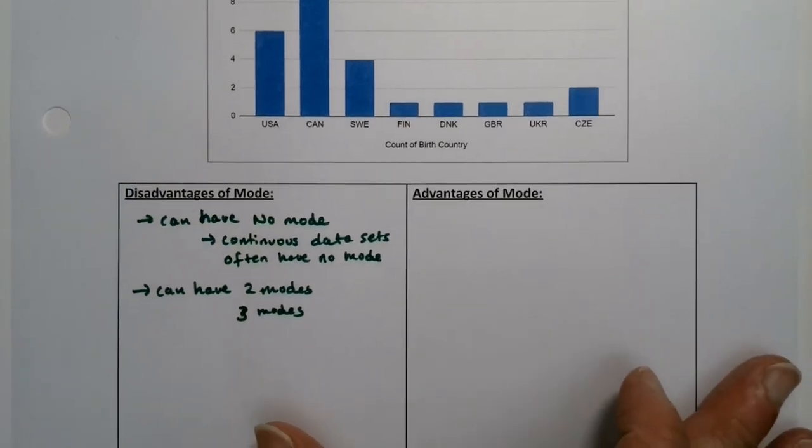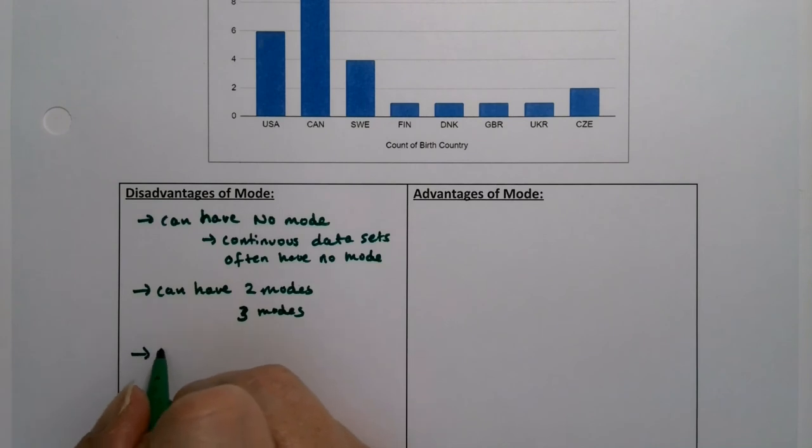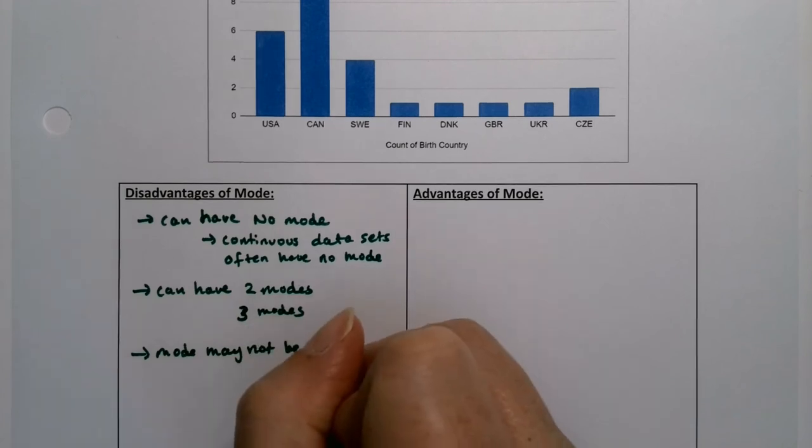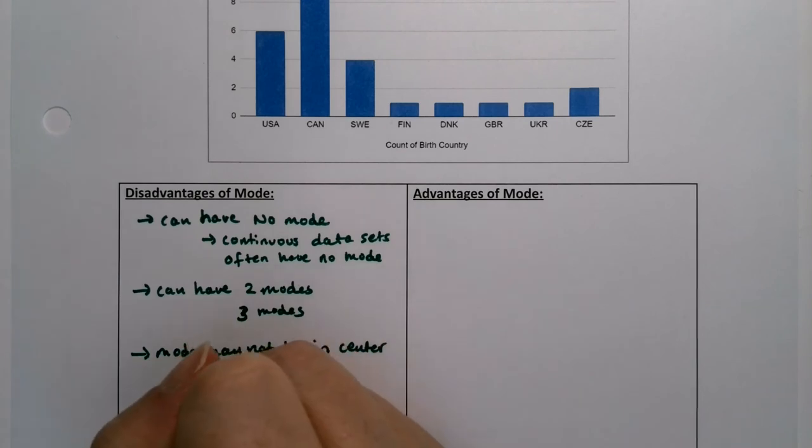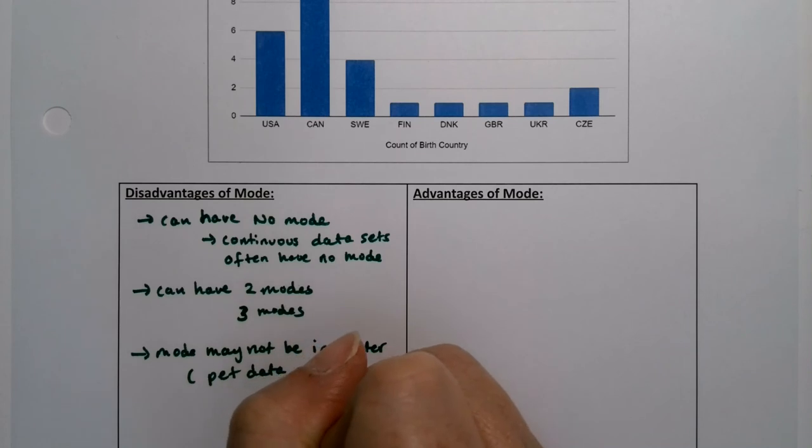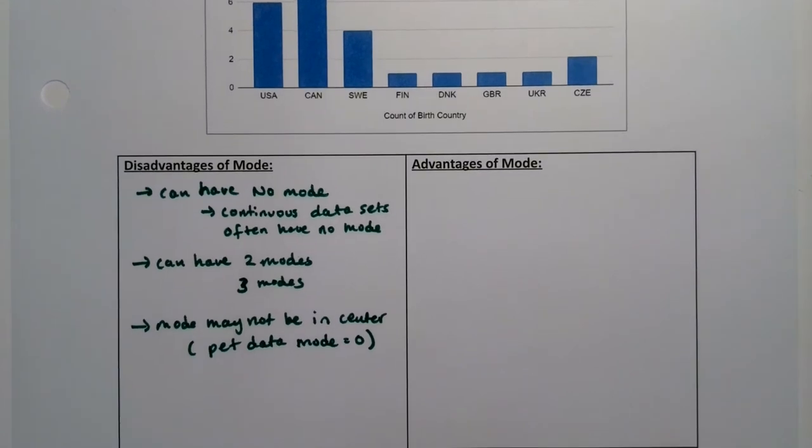The mode might not be at the center at all. Think about our pet data. Our pet data, the mode was zero, which was not really a fair representation of the center of our data set. Not even close.